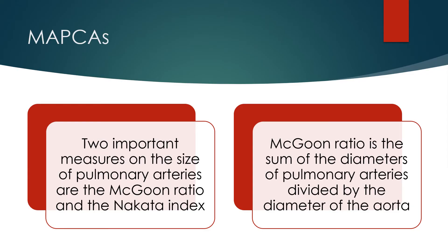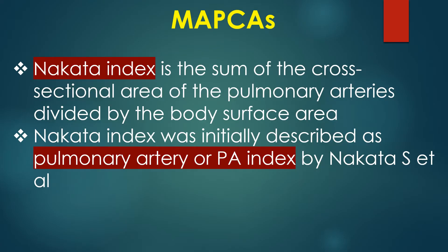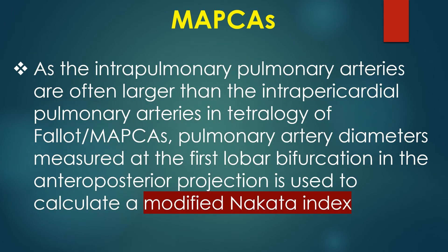Two important measures of pulmonary artery size are the McGoon ratio and the Nakata index. The McGoon ratio is the sum of the diameters of the pulmonary arteries divided by the diameter of the aorta. The Nakata index is the sum of cross-sectional area of pulmonary arteries divided by body surface area, and was initially described as the pulmonary artery index by Nakata and colleagues. In tetralogy of Fallot with MAPCAS, pulmonary artery diameters measured at the first lobar bifurcation in the anteroposterior projection are used to calculate a modified Nakata index.